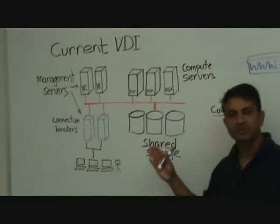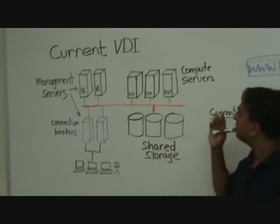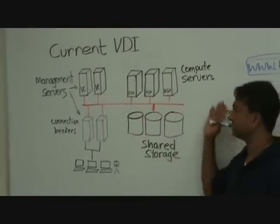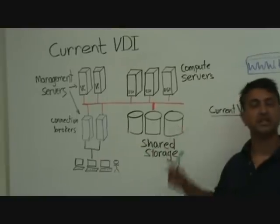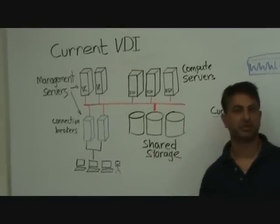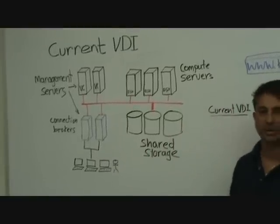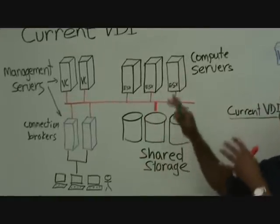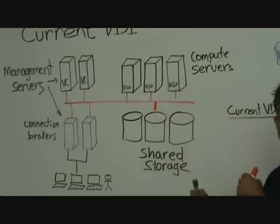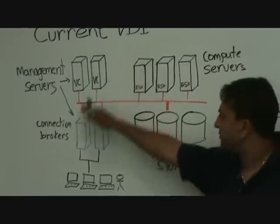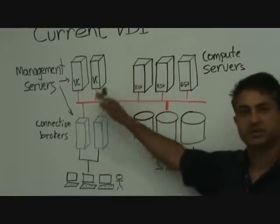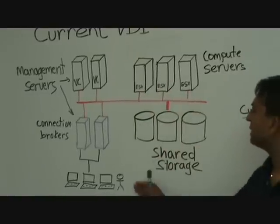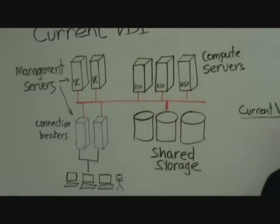What I have here is a typical schematic of a current first-generation VDI. As you can see, there are lots of moving parts — lots of things that you need to be able to generate virtual desktops. First of all, you need compute servers. This is where the virtual PCs run. You've also got a bevy of managing servers that manage virtual PCs and connect the user to a virtual PC.